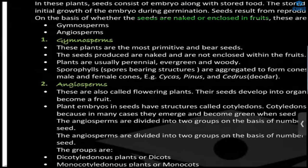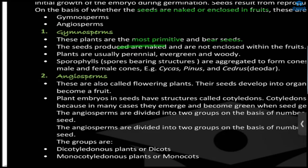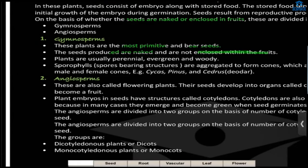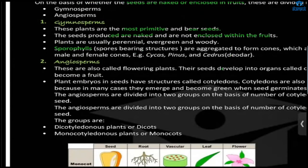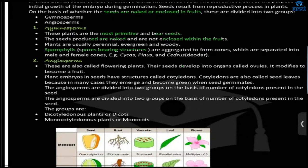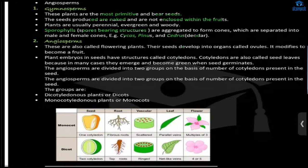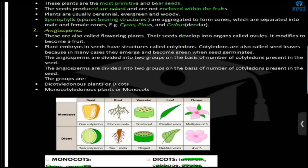Examples of monocots include onion, corn, sugarcane; dicots include tomatoes, cabbage, apples, and peaches. Gymnosperms are the most primitive. They bear seeds, but the seeds are naked and not enclosed within a fruit. These plants are perennial, evergreen, and woody — meaning they are present in every season and always green.